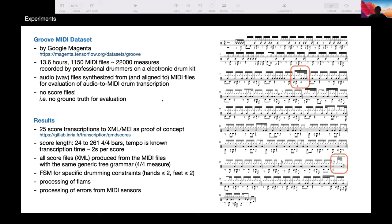Essentially for that work and the paper, we have done 25 transcriptions of scores as a proof of concept into MEI format. The scores are from 24 to 261 bars. The tempo is known for each score, and the transcription time was quite fair, just a few seconds for each score. We have used only one prior language for all the scores, one tree grammar. And it should be noted that we are able to detect the flams, the ornaments also, which is not so common for music transcription.